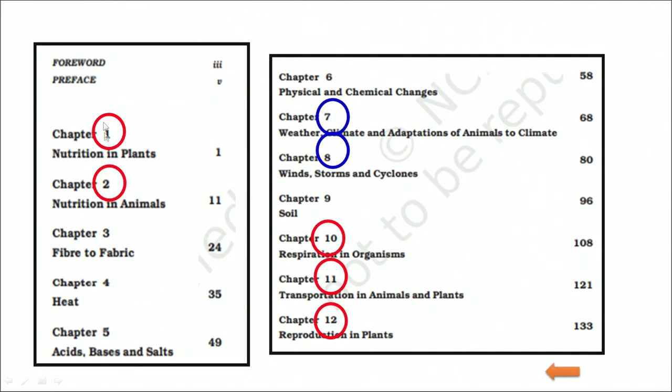Here you will find snapshots of the content of the class 8 science textbook. You will see chapter 1 on nutrition in plants, chapter 2 on nutrition in animals, chapter 10 on respiration in organisms, transportation in plants and animals, and reproduction in plants. These are all units. Note that some course books may say chapters or topics — it means nothing but units.